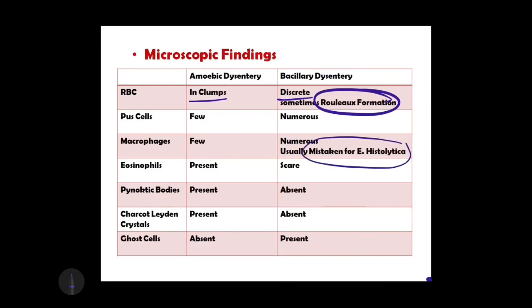Macrophages are few in amoebic dysentery whereas in bacillary they are numerous and are often mistaken for Entamoeba histolytica. The level of eosinophils rises in parasitic infections, so in amoebic dysentery there is a raised level of eosinophils in blood, whereas in bacillary dysentery there may be few or an absence of eosinophils.